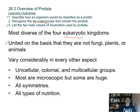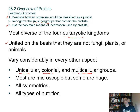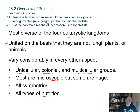Protists vary considerably in every aspect. Some are unicellular, some live in colonies, and some are simply multicellular — meaning at least two or more cell types, not just a colony of the same kind of cells. Most are microscopic, but some like algae are macroscopic and huge. They have all kinds of symmetry and all kinds of nutrition: photoautotrophic, chemoheterotrophic, and so on.